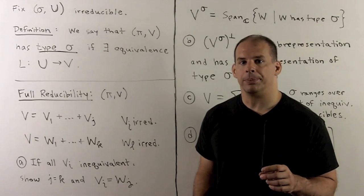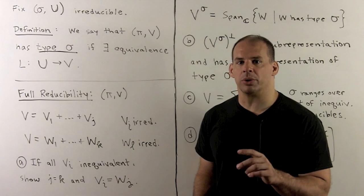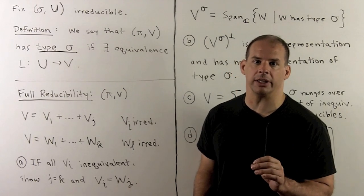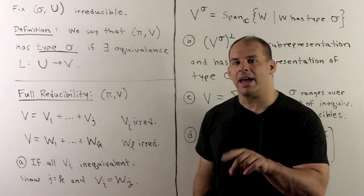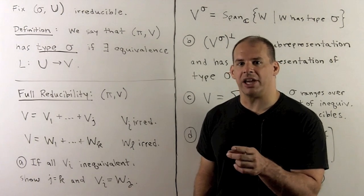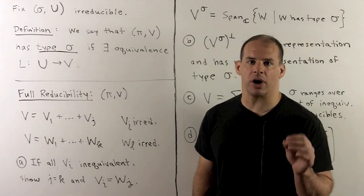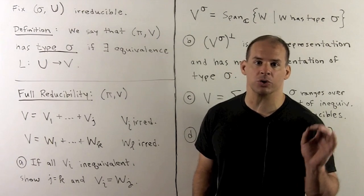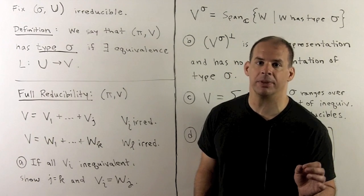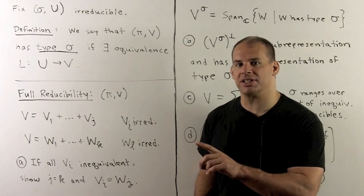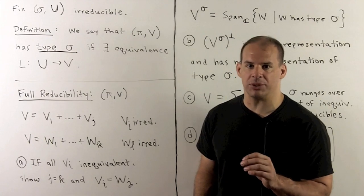We can apply equivalence of irreducibles to the question of full reducibility. That is, every representation can be decomposed into a direct sum of irreducible sub-representations. The question is: how unique is that decomposition?